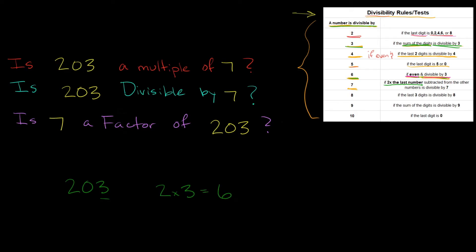Now we subtract from the other digits. We used the 3, so the remaining digits are 20. We do 20 minus 6, which equals 14. Is 14 divisible by 7? Yes — 7 fits into 14 evenly, 2 times. So we pass the test. Is 203 a multiple of 7? Yes. Is 203 divisible by 7? Yes. Is 7 a factor of 203? Yes. That's how you deal with 7 — just practice the steps a couple of times and you'll get it.